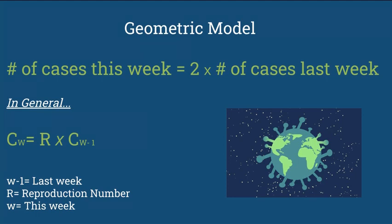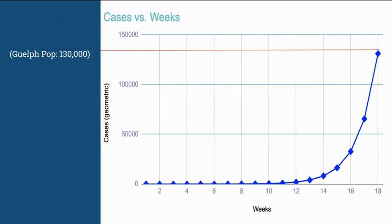What would this mean for Guelph, Ontario and Canada? The cases appear to grow slowly at first, though by week 18 they are shooting up way too fast. Luckily it's not completely like this in reality.